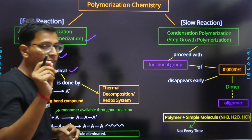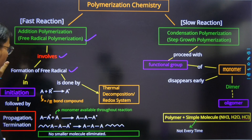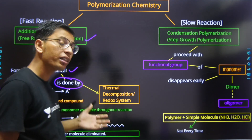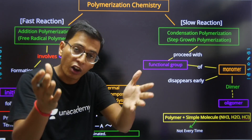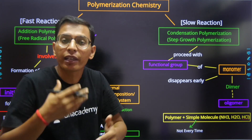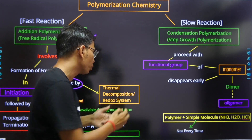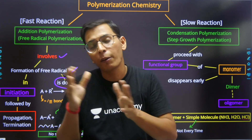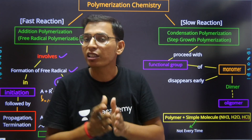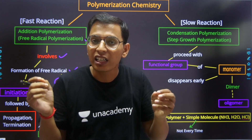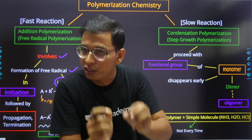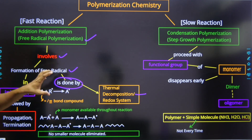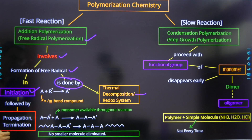Free radicals come from thermal decomposition reactions. Normally we talk about peroxides — to activate them we need a slightly elevated temperature, which is known as thermal decomposition. The second method is the redox system: any peroxide, sulfate, ferrous, or persulfate that acts in the initiation step.